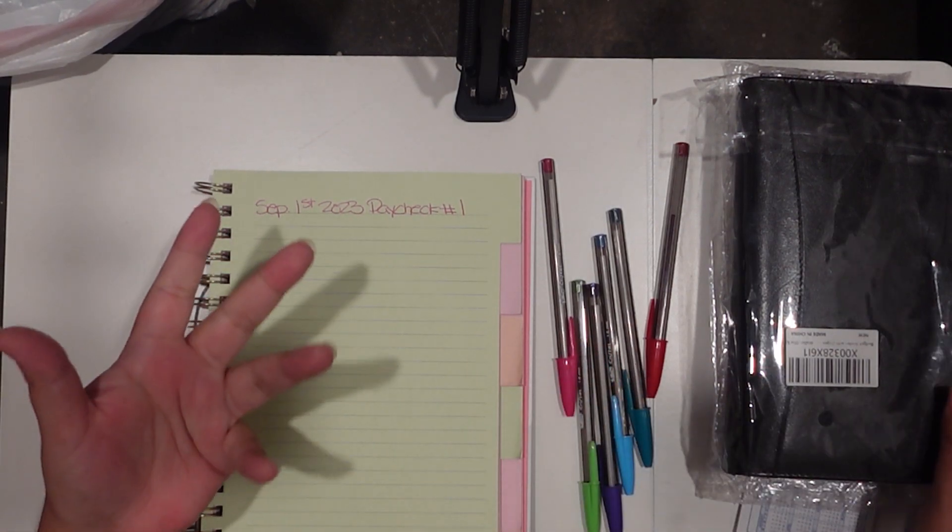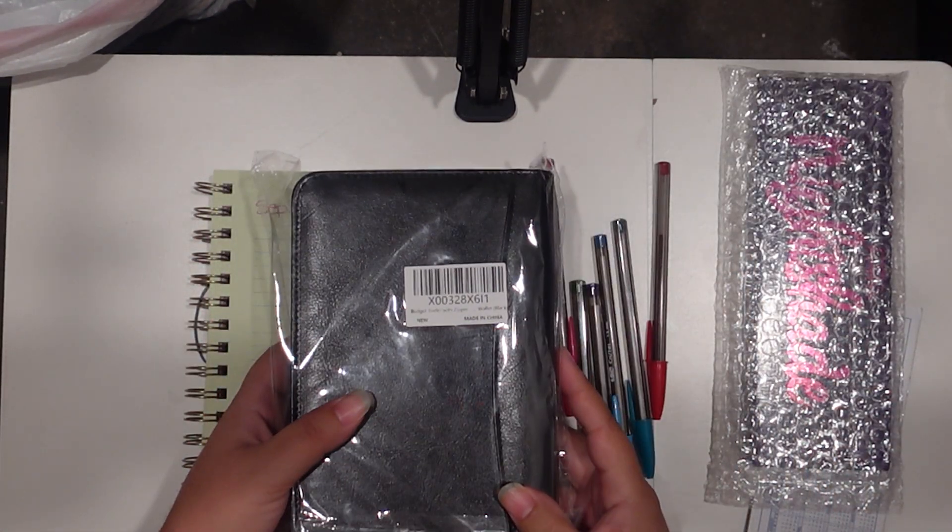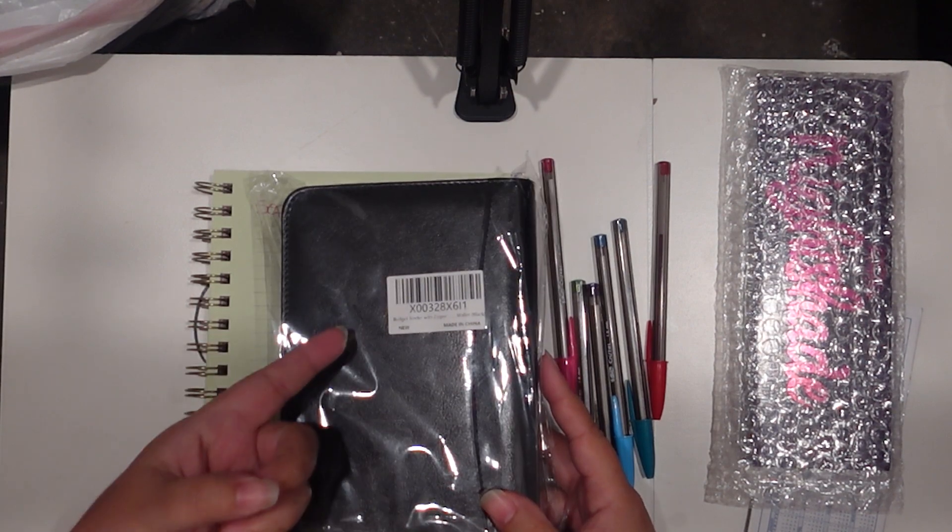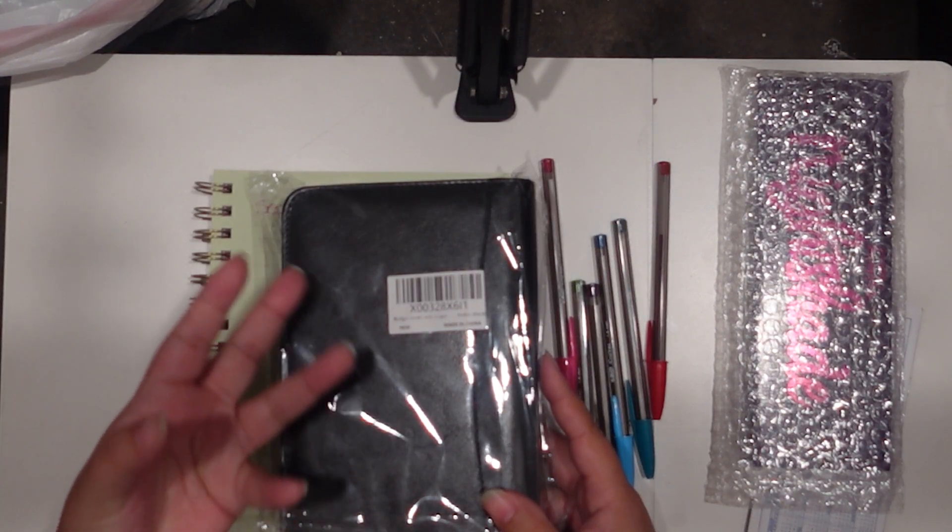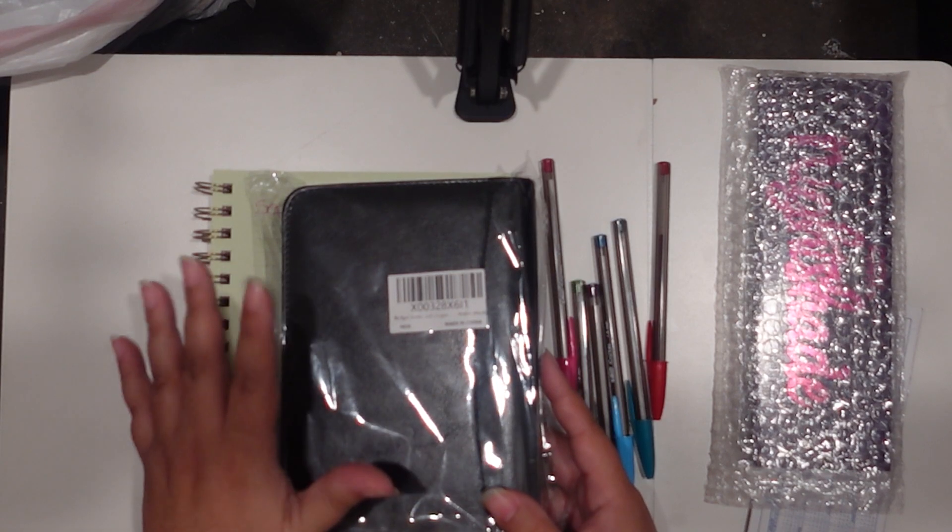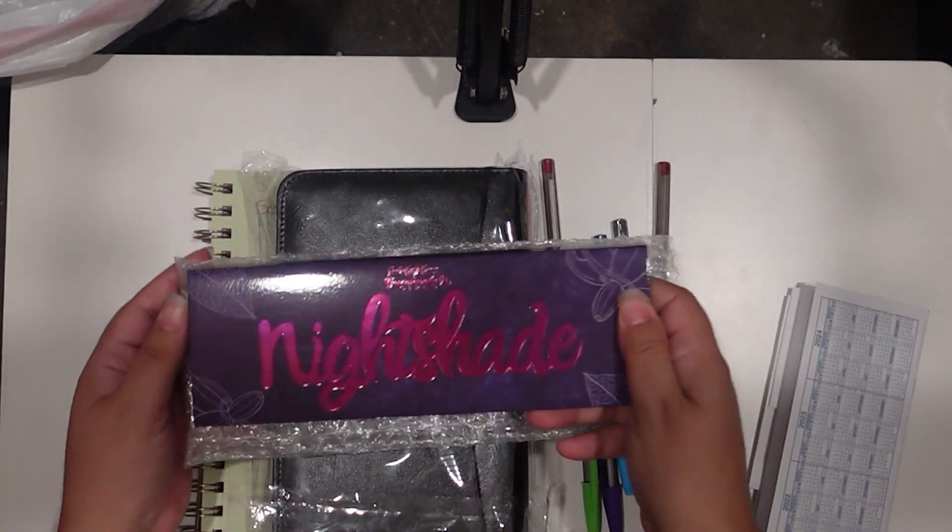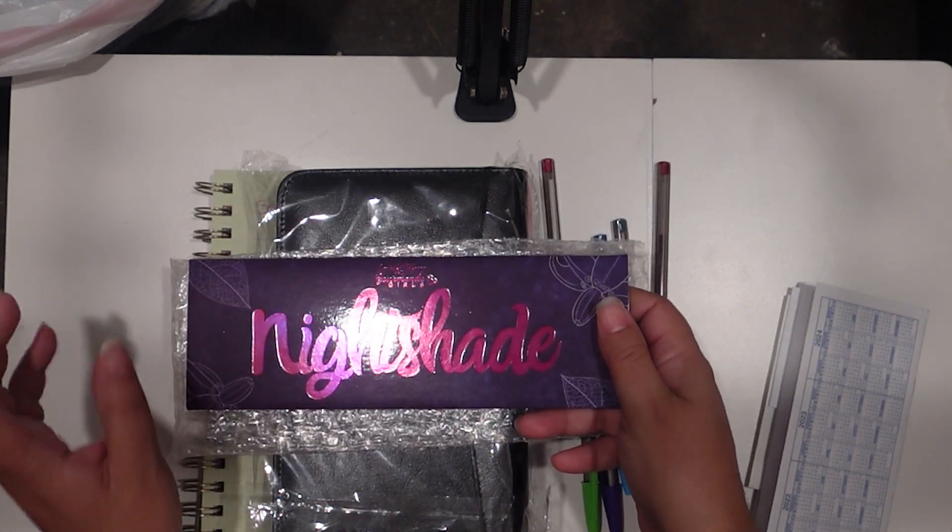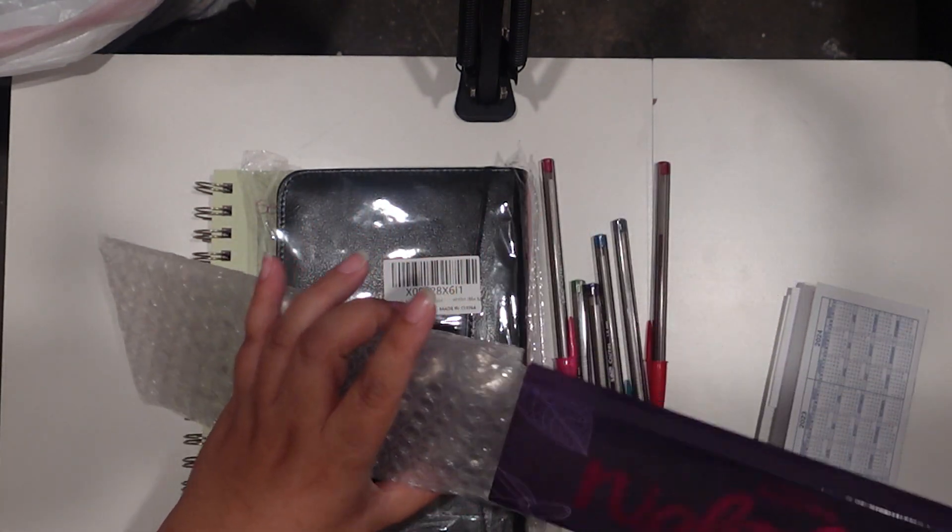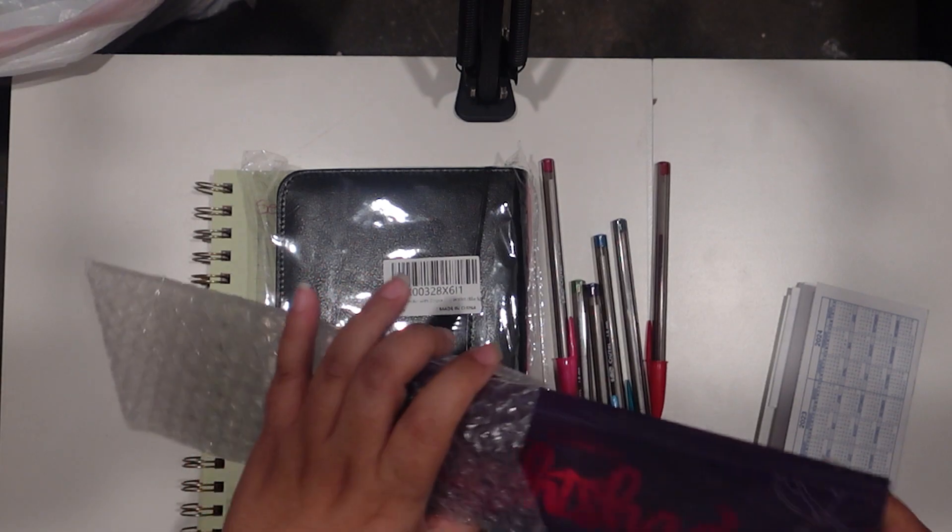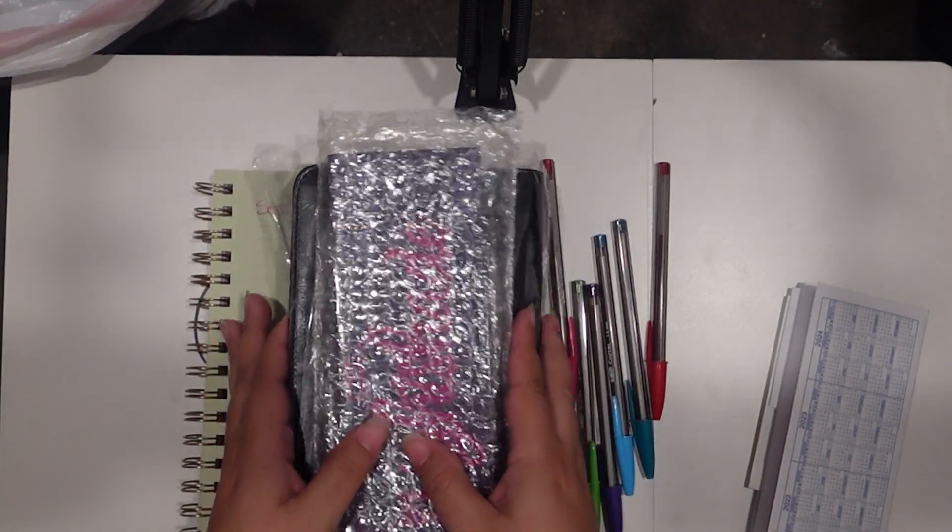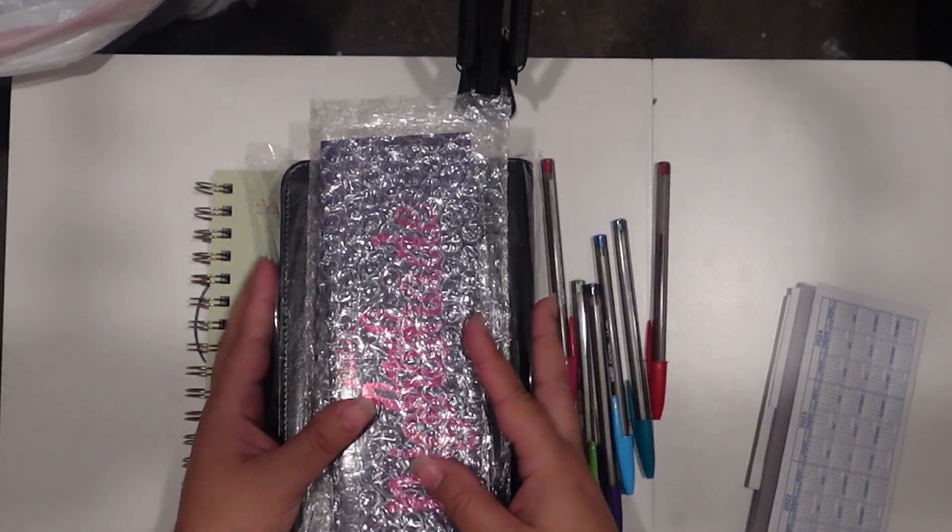When I reach 350 subscribers, I'm going to give away this A6 binder which has the envelope savings challenge labels, pretty much the whole set for you to start, and also this nightshade eyeshadow palette by Gourmand Girls.